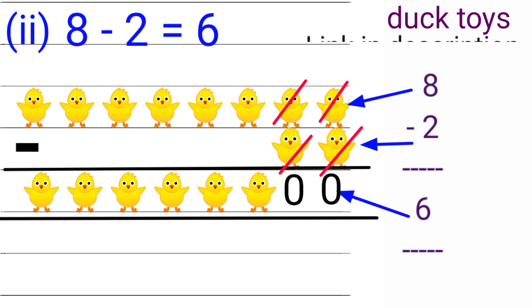8 minus 2. Here we have eight ducks, take off two ducks from eight ducks, then what is the result? The answer is 6. We left with six ducks.